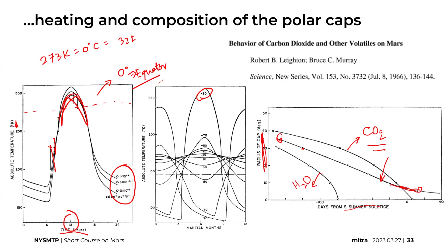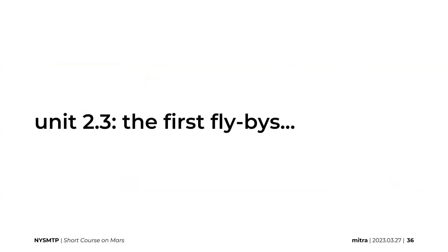At that time, people were a little disappointed because the ice appeared to be CO2 ice rather than H2O ice — and more H2O means more prospect for life, while CO2 is less promising. We'll later see that the polar caps do contain both CO2 and water ice. Let's take a five-minute break and then look into some of the first flyby missions sent to Mars.